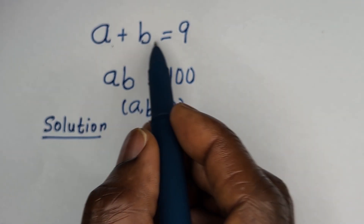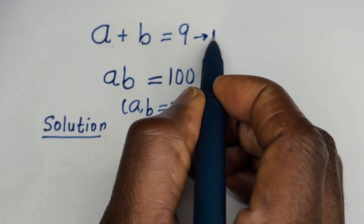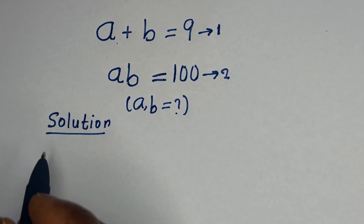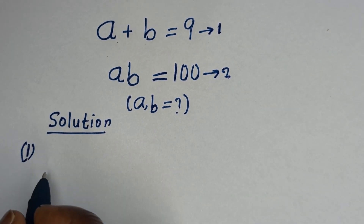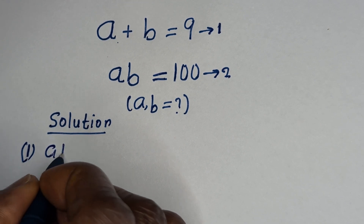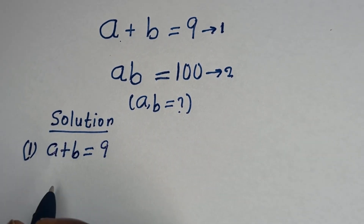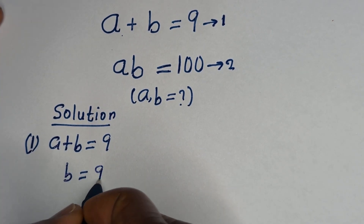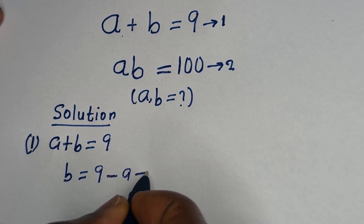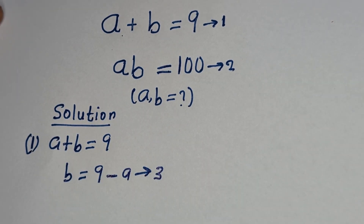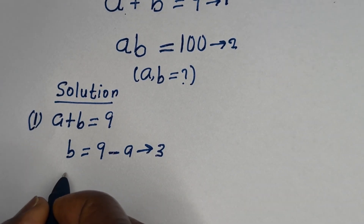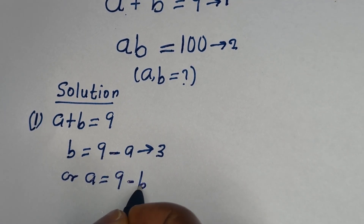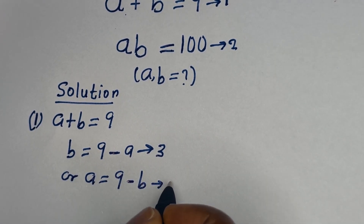From here, A plus B is equal to 9 — let us call this equation 1. AB is equal to 100 — let us call this equation 2. Then from equation 1, A plus B is equal to 9, so B is equal to 9 minus A. Let us call this equation 3. Or equivalently, A is equal to 9 minus B — this is also equation 3.